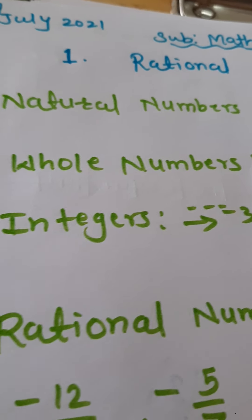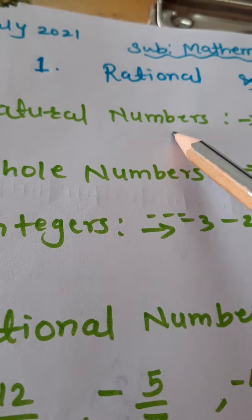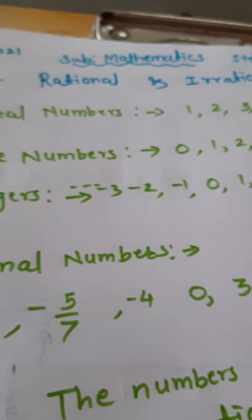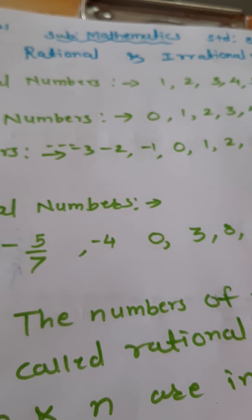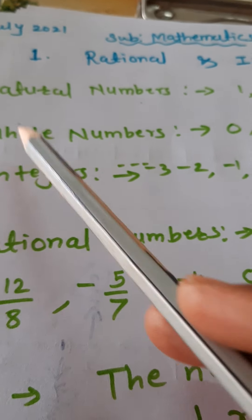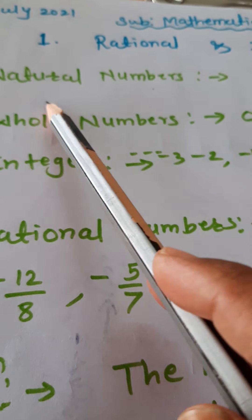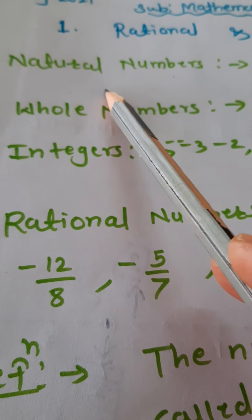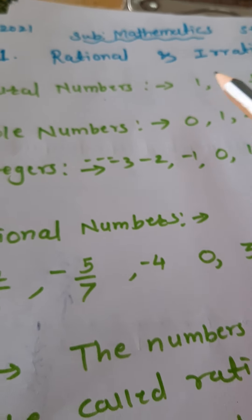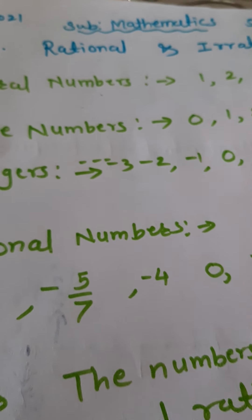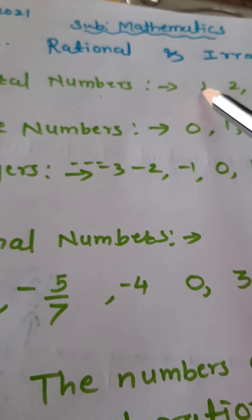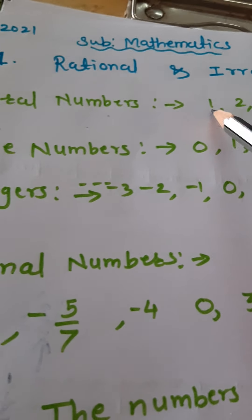The first group of numbers is natural numbers: 1, 2, 3, 4, 5 and so on. Infinite numbers are there, so this group is called natural numbers. It is also called counting numbers because these numbers we use for counting different things. And 1 is the least natural number.